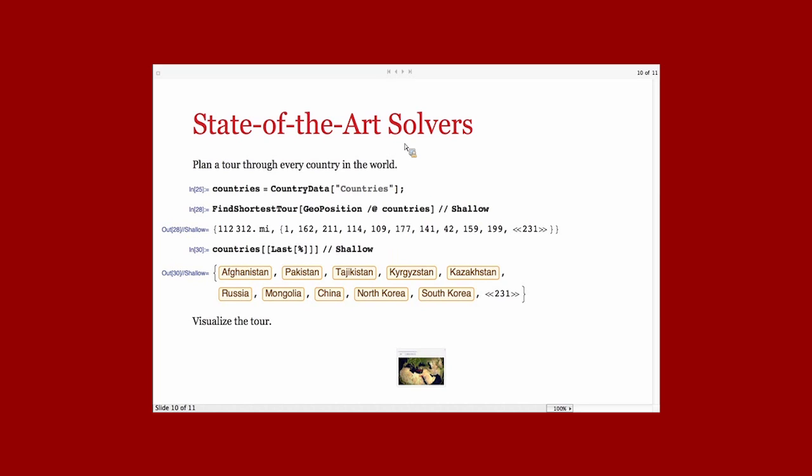For example, you can plan the shortest tour to all the countries in the world. You can use CountryData to find the countries, use GeoPosition, which is new functionality beyond what I talked about earlier, and call FindShortestTour over it.